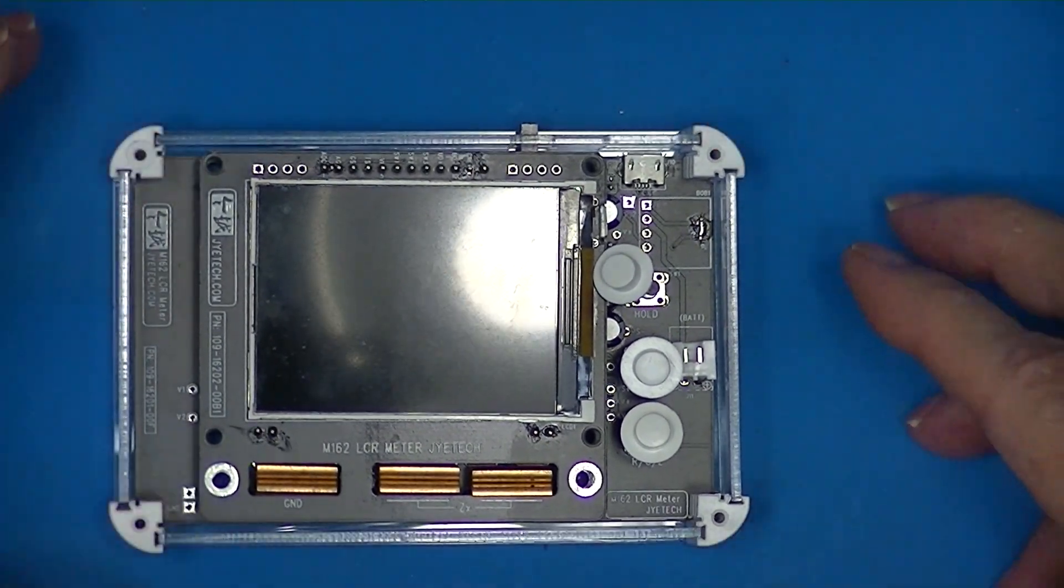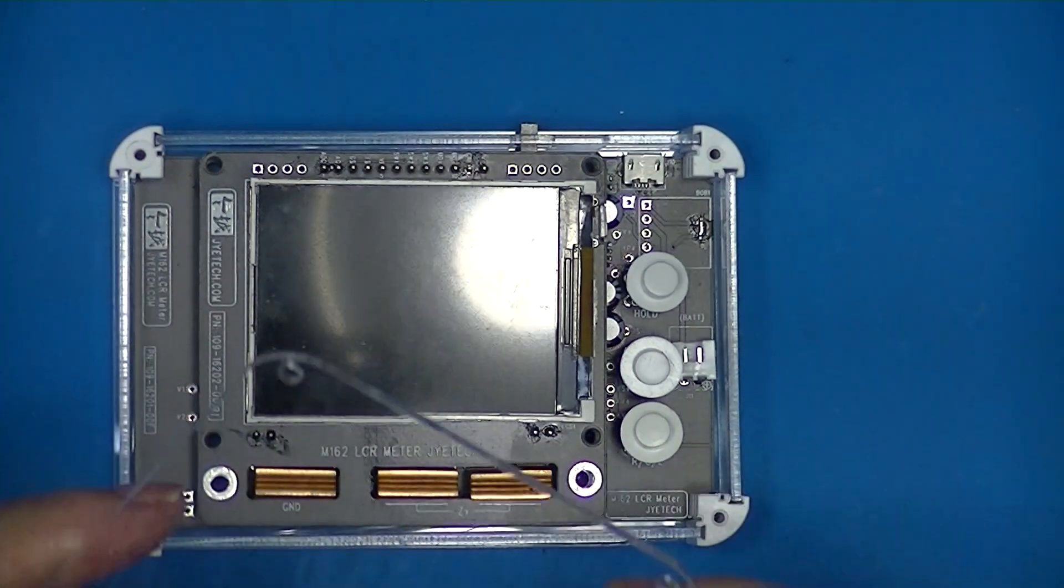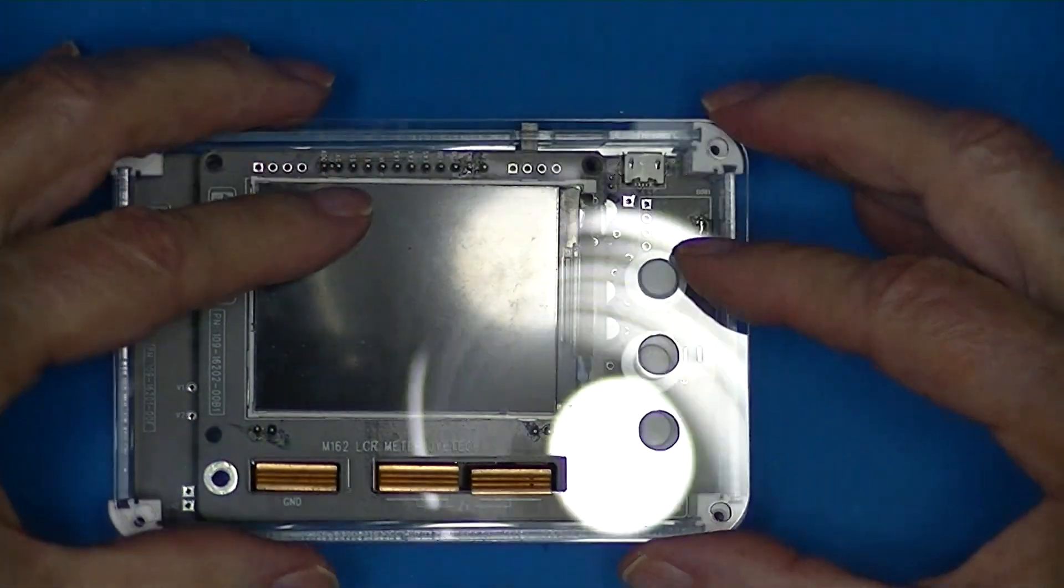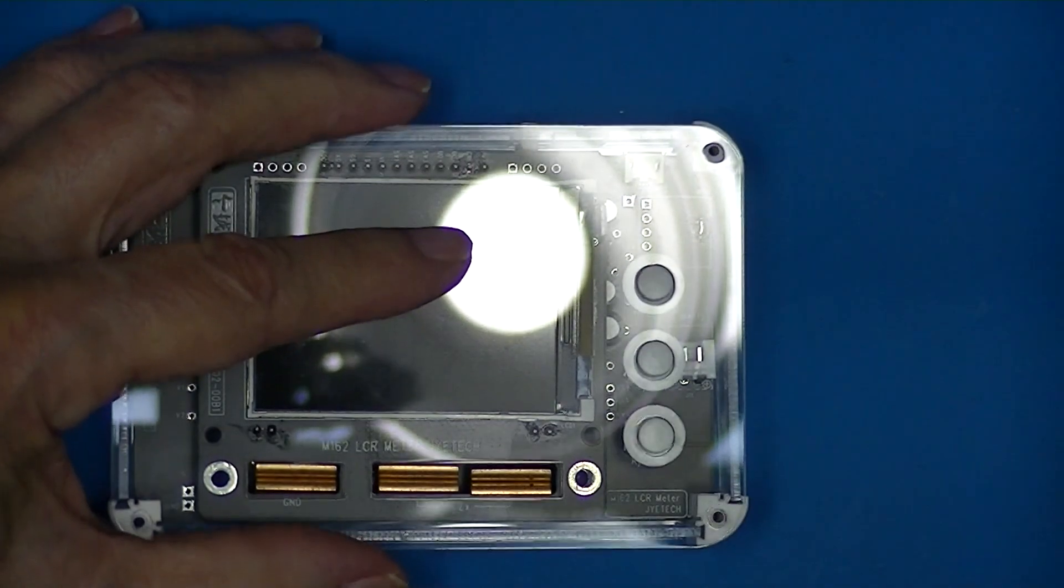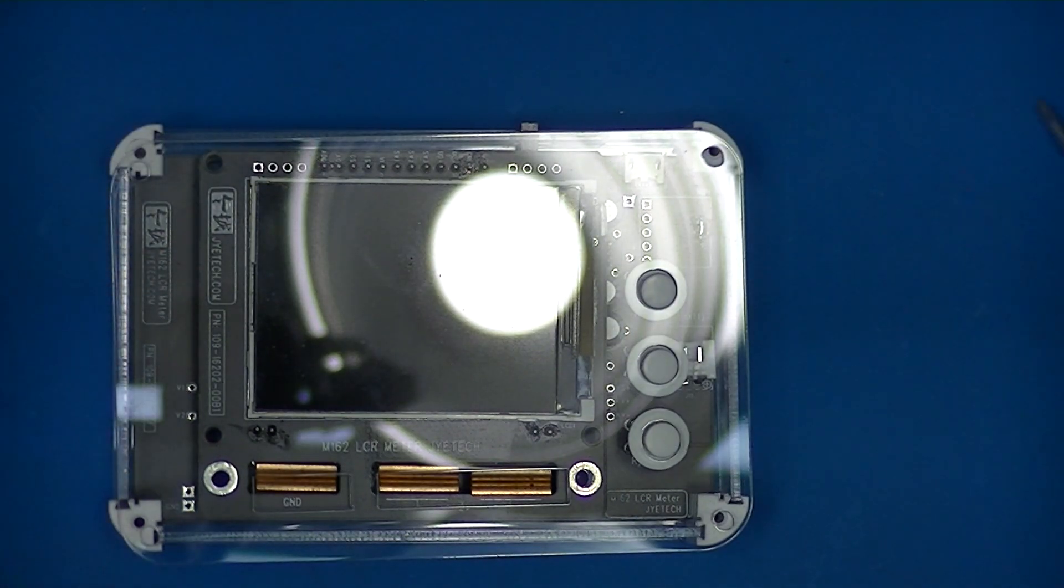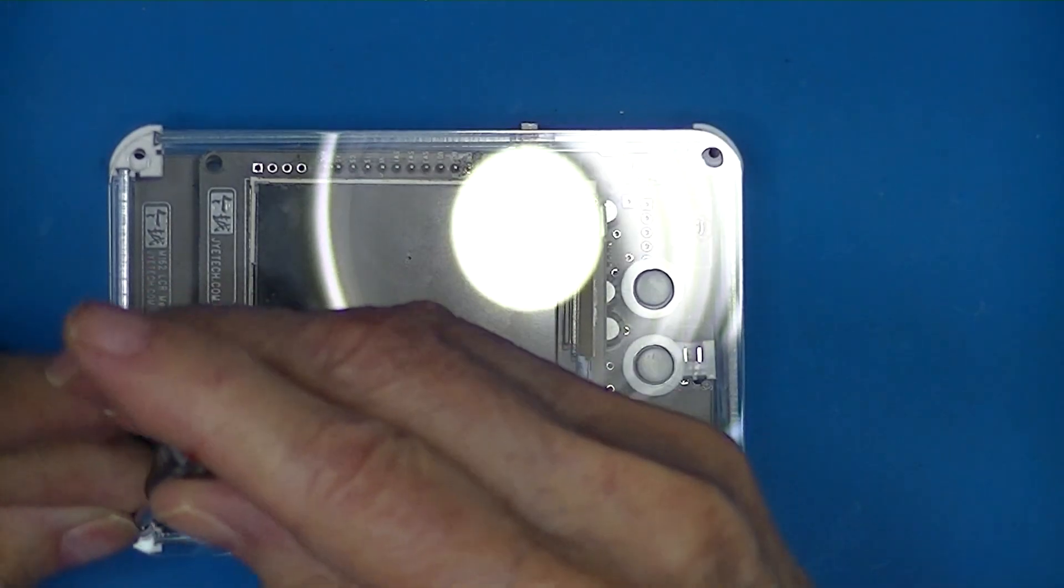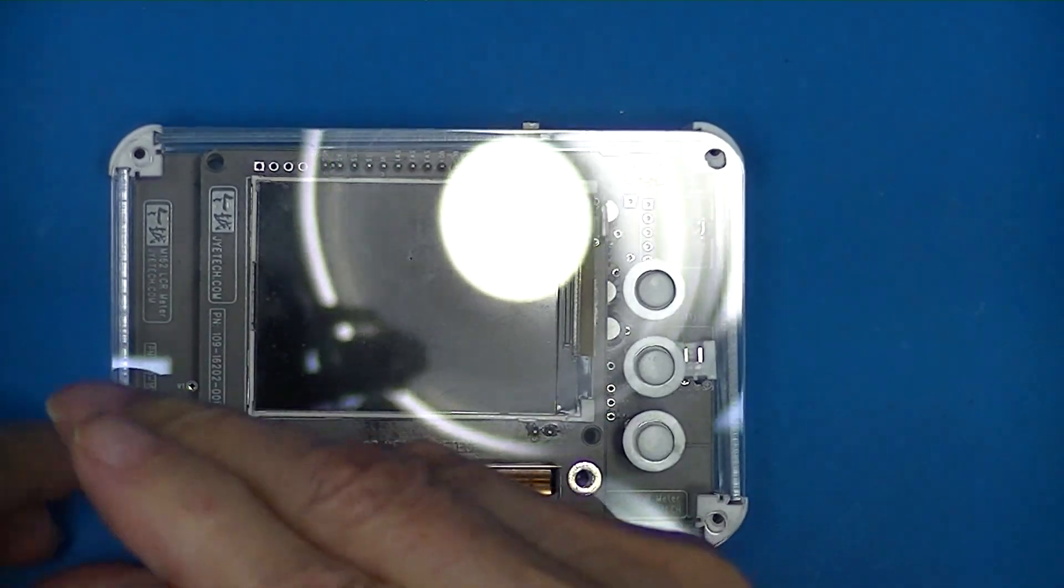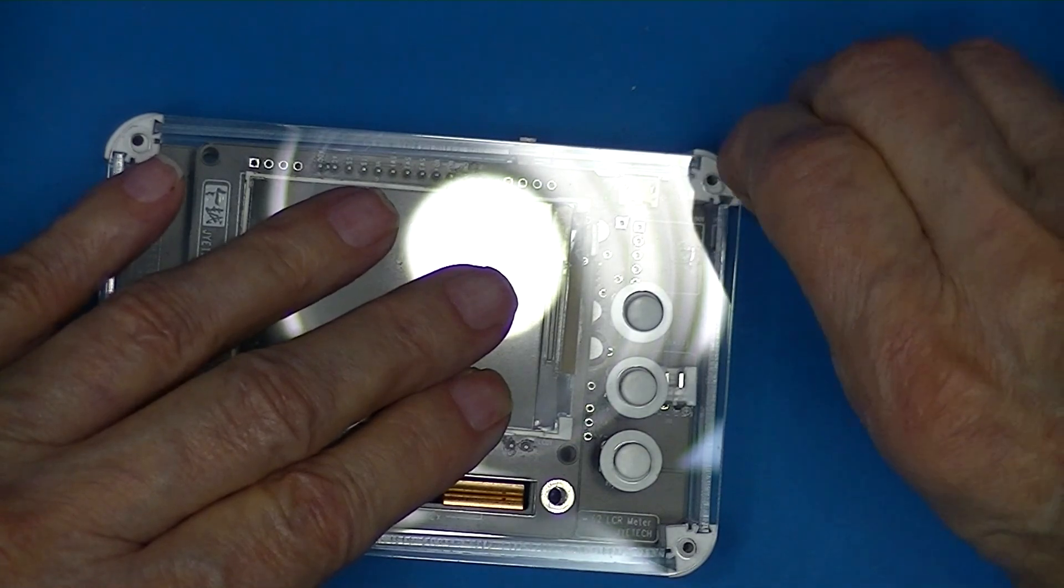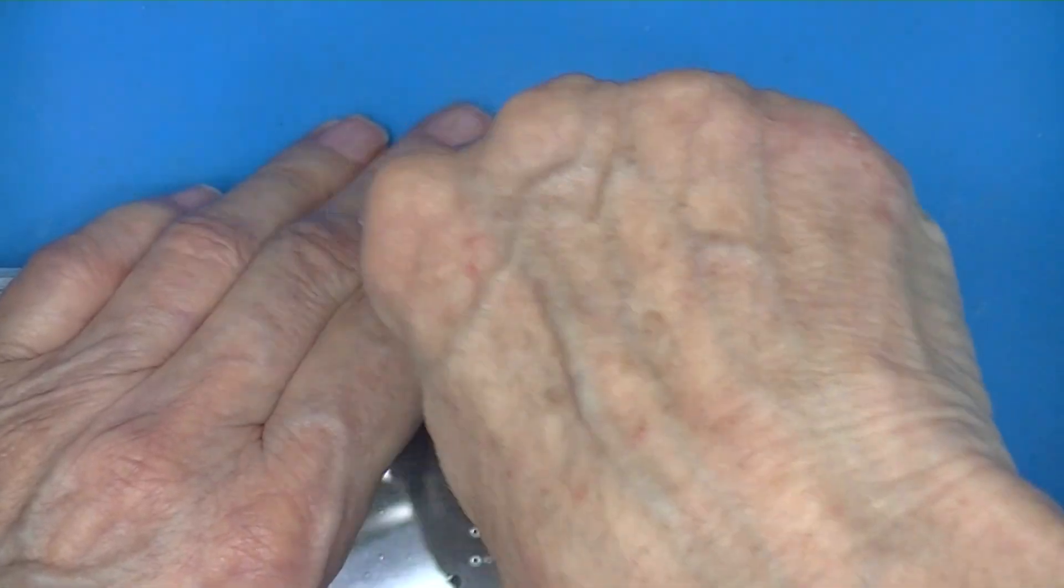All right. So there we have all four corners, two ends, back and front installed, and the caps. Just set the top in place, get the caps through the holes. There we go. Start these screws. There we go.